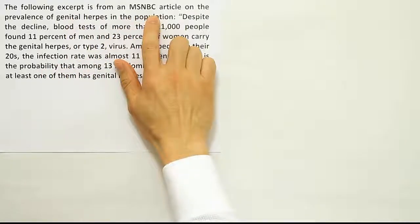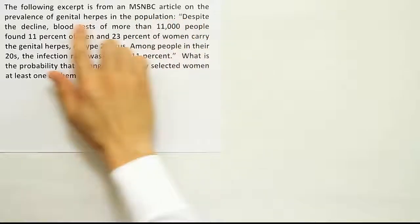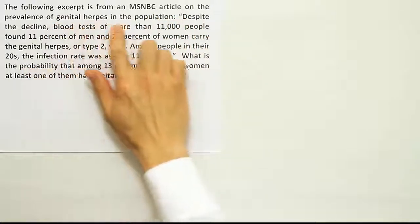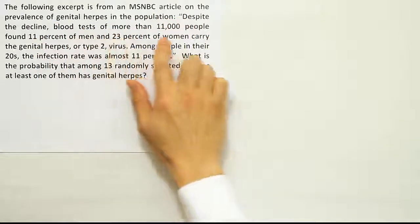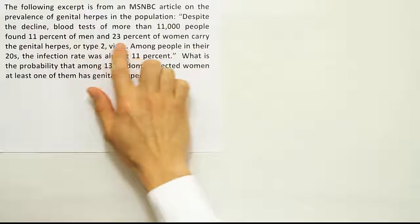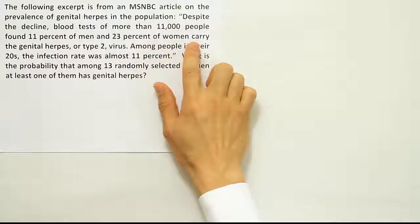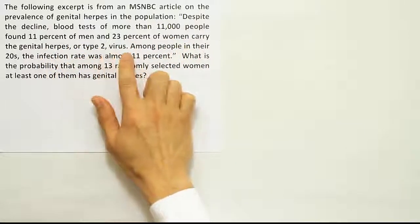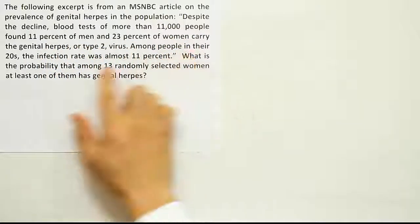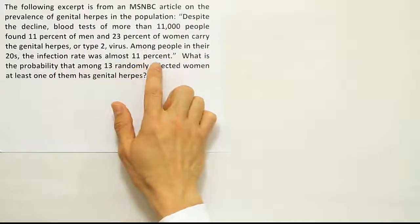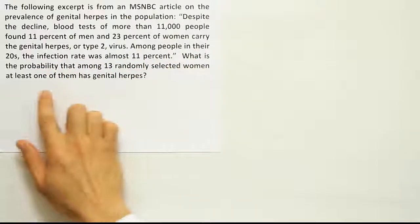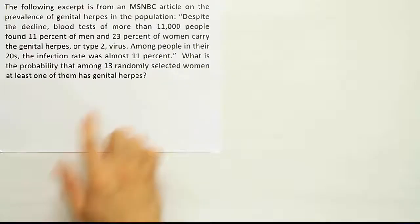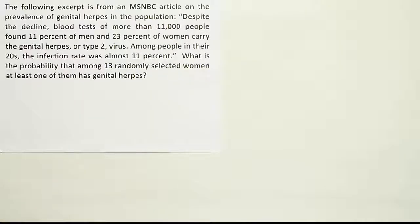The following excerpt is from an MSNBC article on the prevalence of genital herpes in the population. Blood tests of more than 11,000 people found 11% of men and 23% of women carry the genital herpes, or type 2, virus. Among people in their 20s, the infection rate was almost 11%. What is the probability that among 13 randomly selected women, at least one of them has genital herpes?